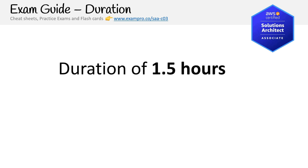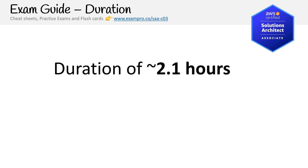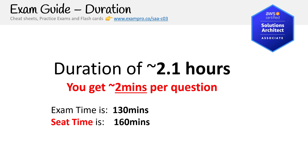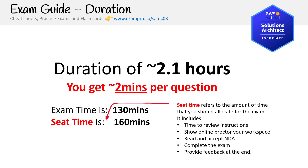Regarding duration: you have 2.1 hours for the exam, which works out to about two minutes per question. The exam time is 130 minutes and the seat time is 160 minutes — we always add 30 minutes for seat time. Seat time refers to the total time you should allocate because they tell you to check in 30 minutes to an hour early. It includes time to review instructions, show the online proctor your workspace, read and accept the NDA, complete the exam, and provide feedback at the end.